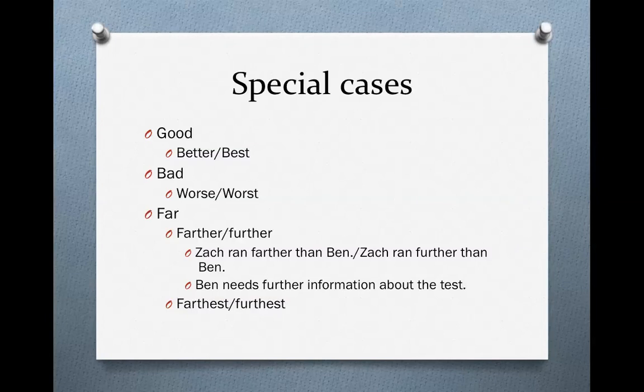There are a few adjectives that are special cases. To make them comparative and superlative, you have to completely change the form of the adjective or adverb. For instance, 'good' is an adjective and 'well' is an adverb — they mean the same thing. In both cases, the comparative form is 'better' and the superlative form is 'best.' With the adjective 'bad' or the adverb 'badly,' we use 'worse' in the comparative form and 'worst' in the superlative form.